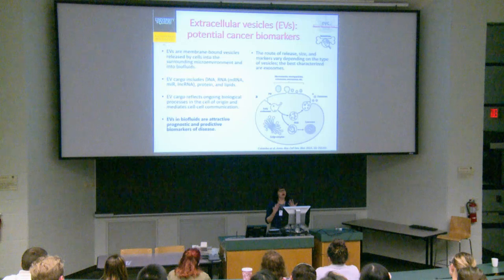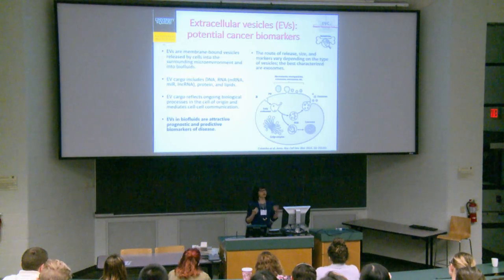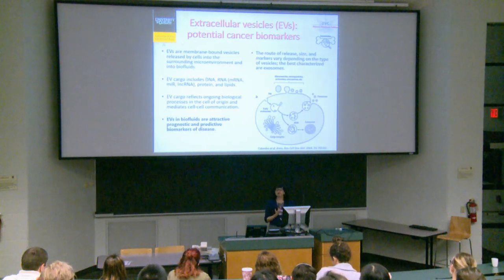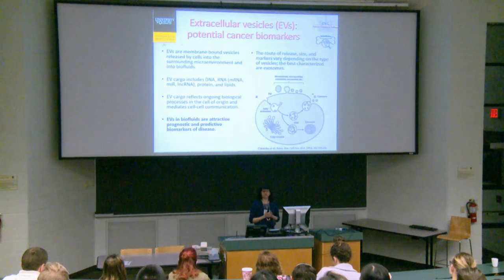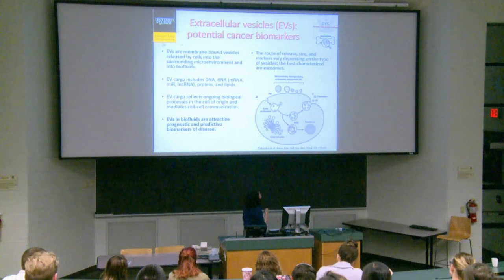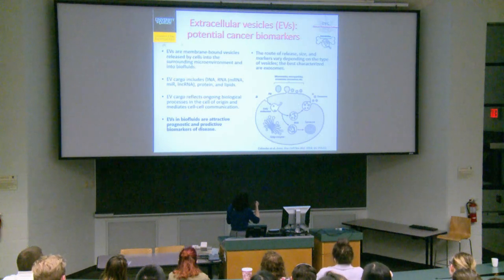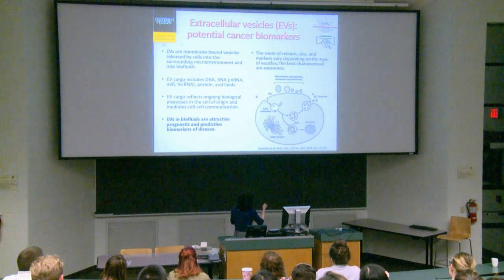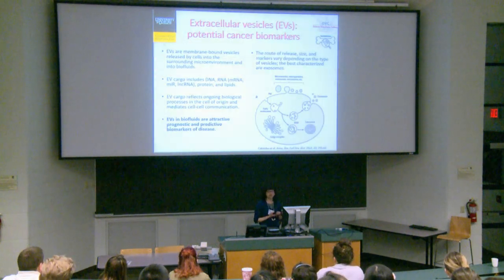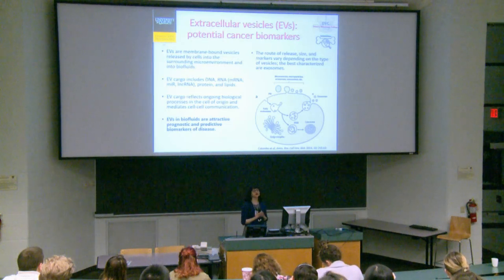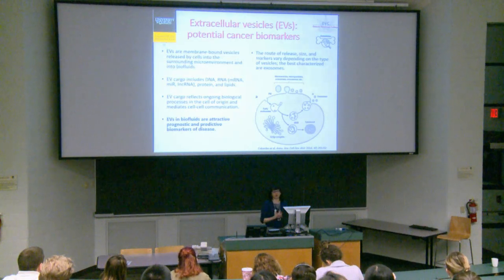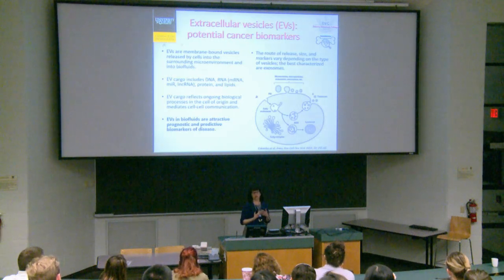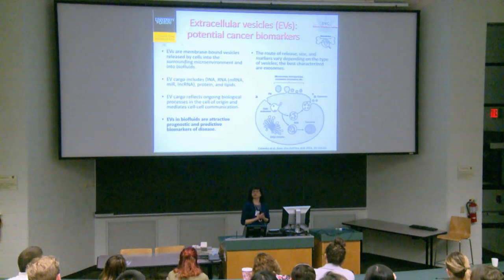Extracellular vesicles are membrane-bound vesicles released by cells into the microenvironment, from where they can access biofluids such as blood, urine, and milk. The route of release, size, and markers these vesicles express vary depending on the type of vesicle. The best known are exosomes, which come from the endocytic pathway and are produced by exocytosis of vesicles inside multivesicular bodies. Their cargo — DNA, RNA, proteins, or lipids — reflects the cell of origin and the biological processes ongoing in those cells. They can be taken up by neighboring cells, making them important for cell-cell communication.